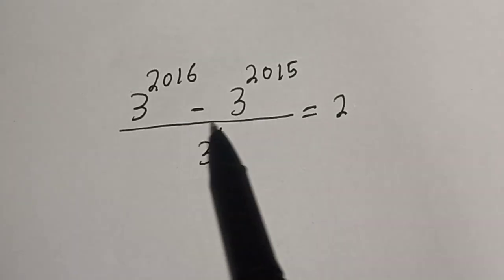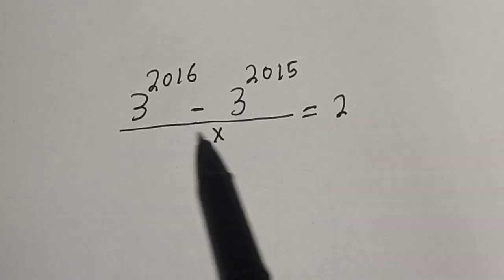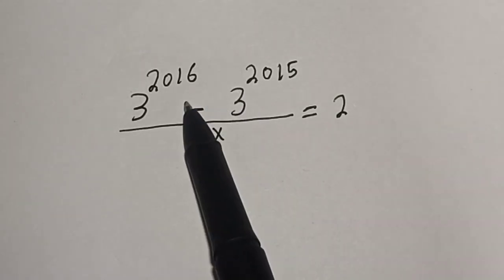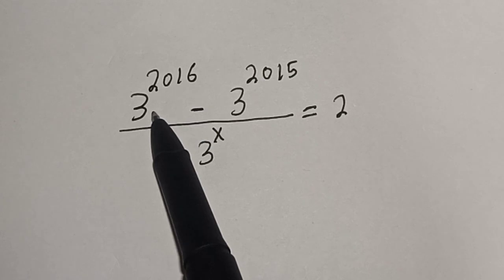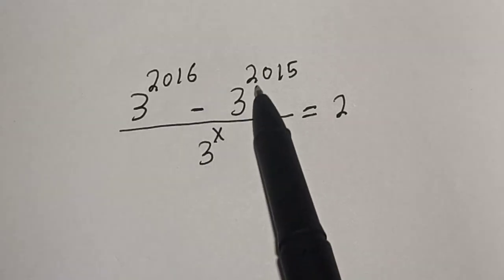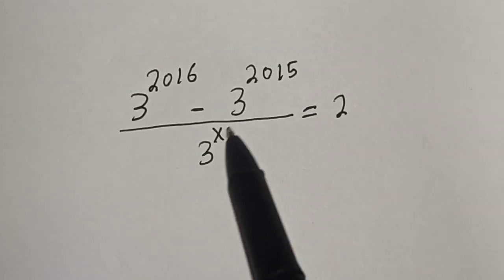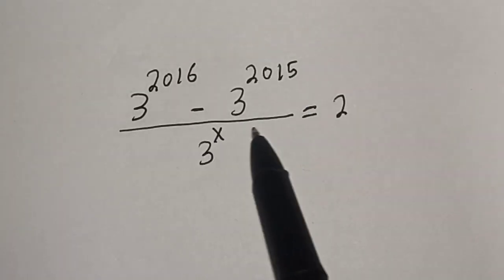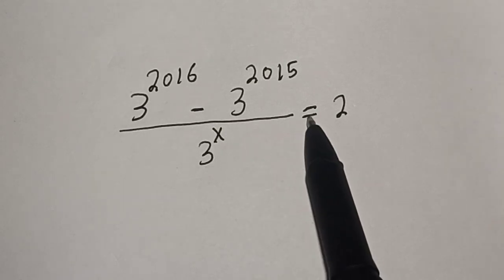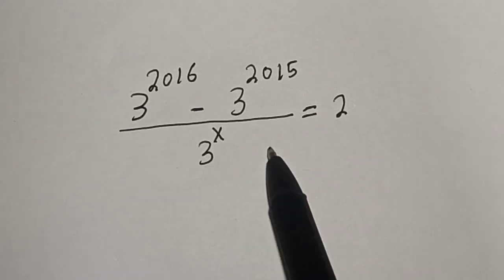Hello, welcome to Magis. In this class we want to find the value of s from this equation: 3 raised to power 2016 minus 3 raised to power 2015, over 3 raised to power s, is equal to 2.